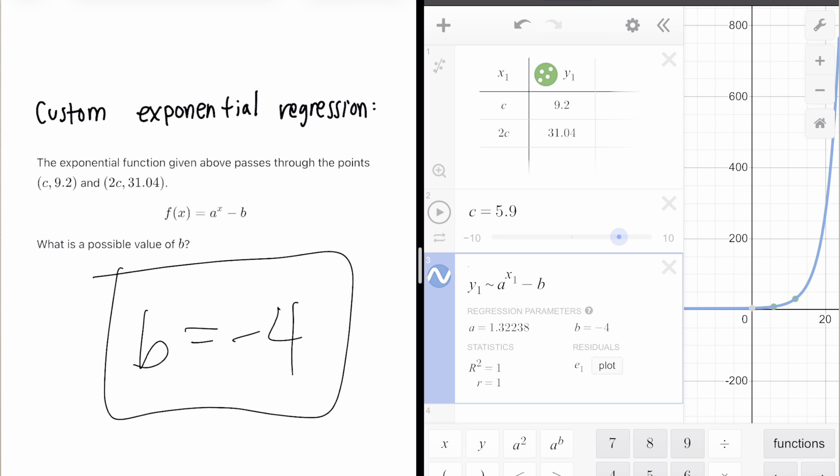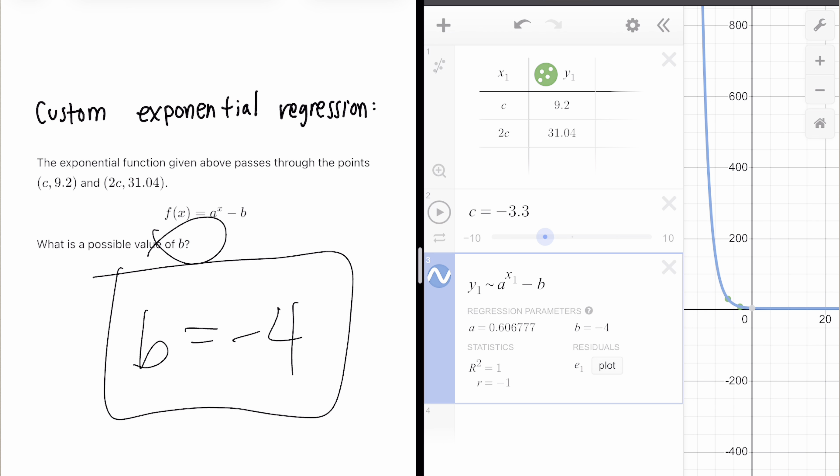Again, this is completely allowed on the SAT. So you should learn it. And specifically, you should learn when to use it. You should always use this regression tool whenever you need to find the function that goes through two given points. Even if they're not perfectly given, for example, in this case, we had C and 2C, you could still define C and you would still get the function. At least you would still get a consistent B value. At the end of the day, that's what you're solving for.